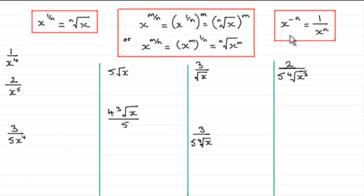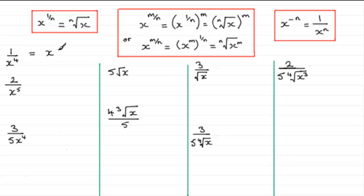We start off with 1 over x to the power 4. This particular term matches up with the rule 1 over x to the power n, which is the same as x to the power minus n. So n is 4, and we can write this as x to the power minus 4.